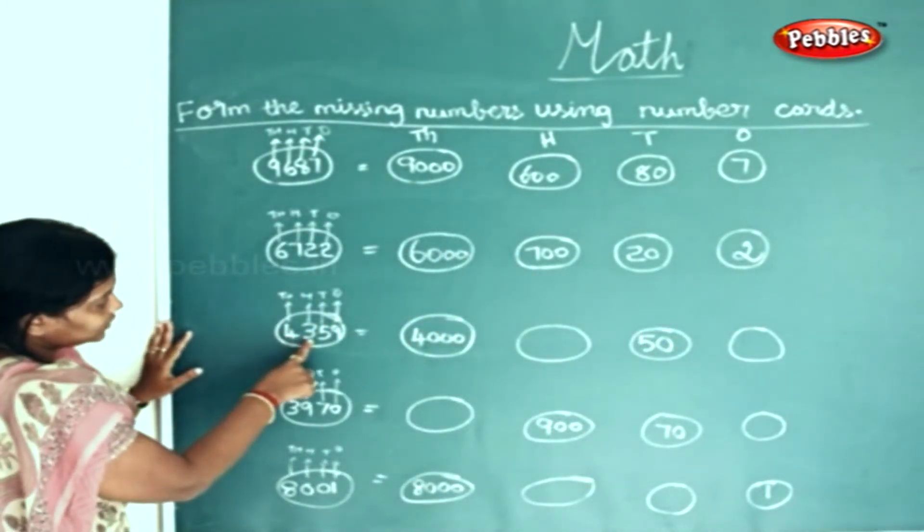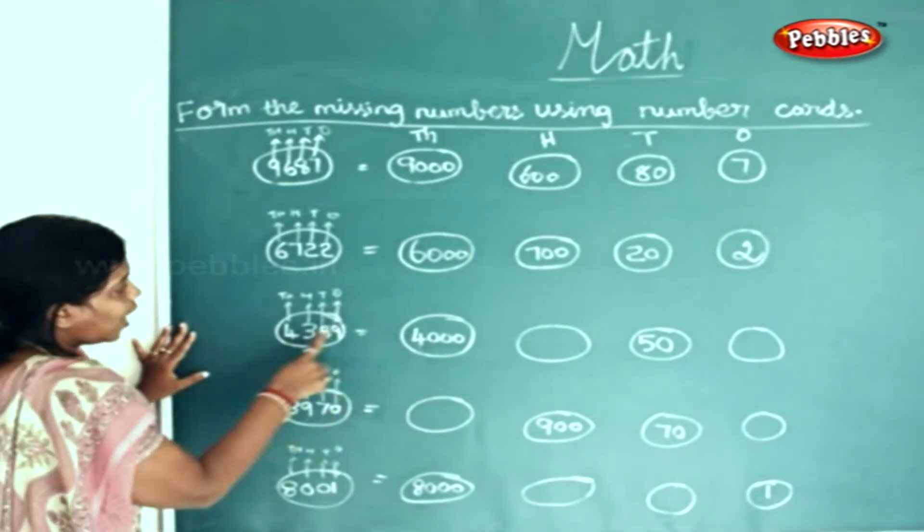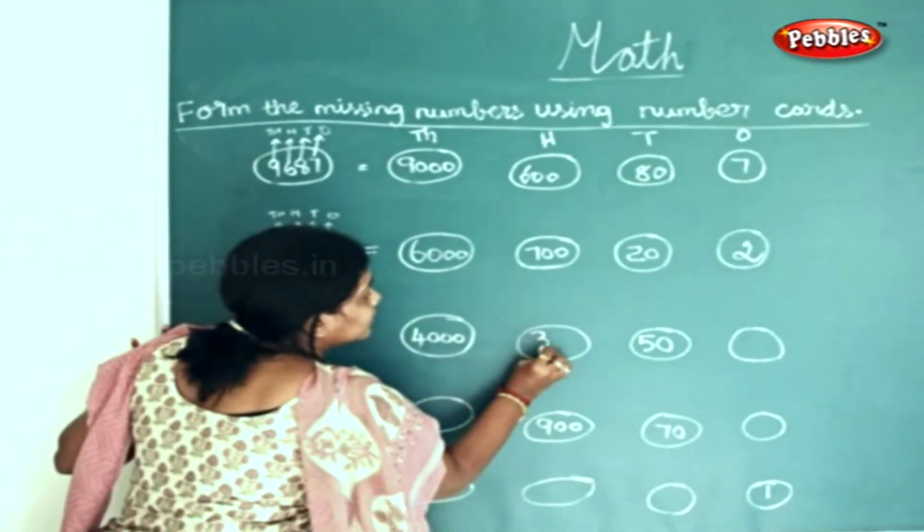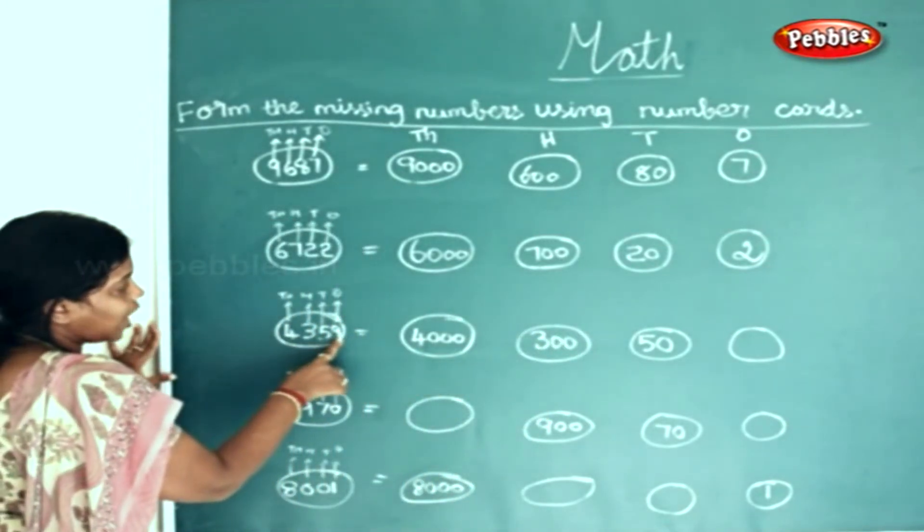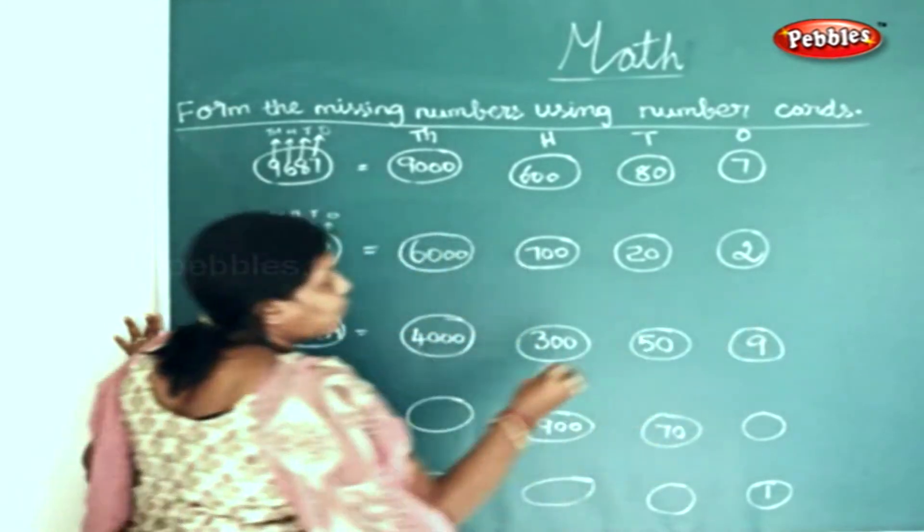In this sum, 4,359. 4 thousands. How many hundreds? 3 hundreds. How many tens? 5 tens. How many ones? 9 ones.